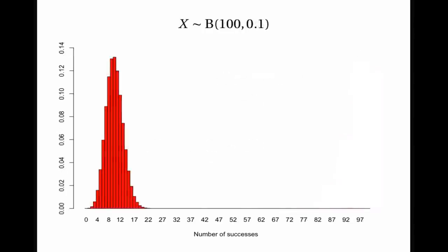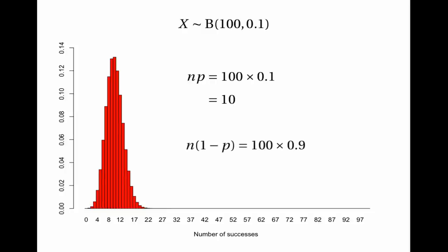One more example — to show that what matters is not only p but also the number of trials. With n=100 and p=0.1, even though p is small, np is 100 times 0.1 which is 10, and n(1-p) is 100 times 0.9 which is 90. Both 10 and 90 are greater than 5, so it's fine to approximate with the normal distribution, as you can see by superimposing the normal curve.